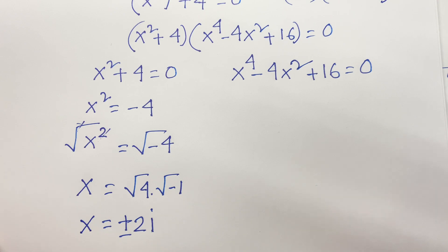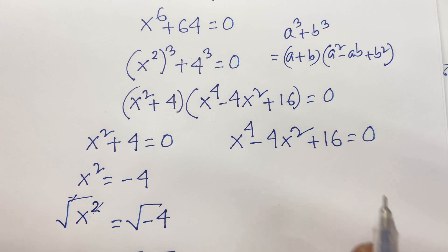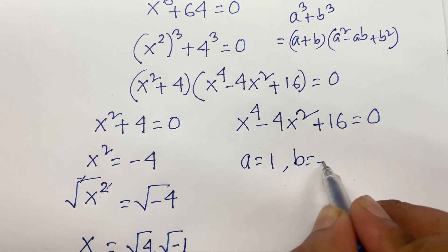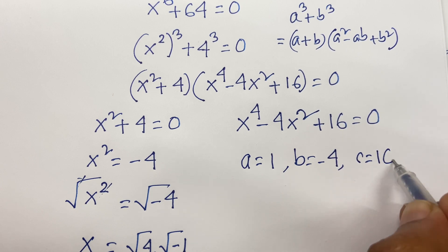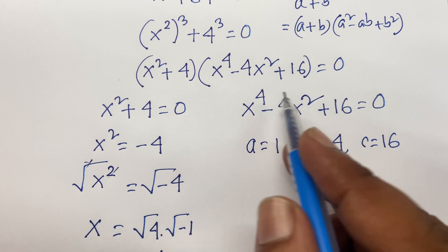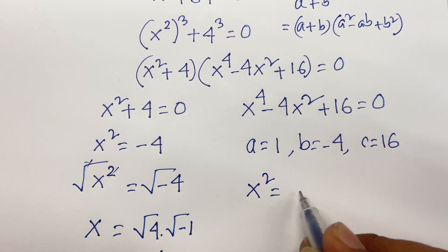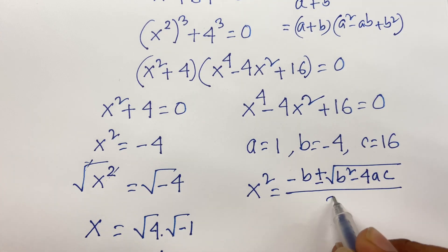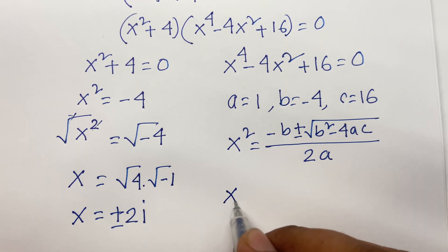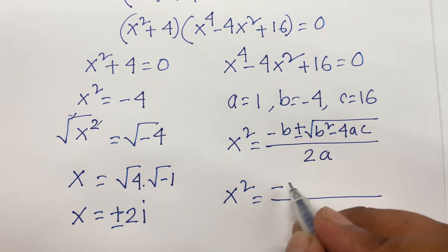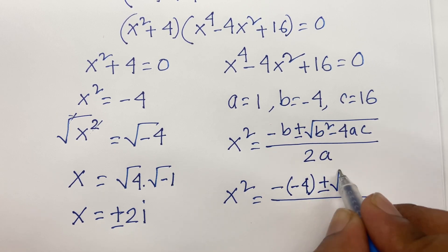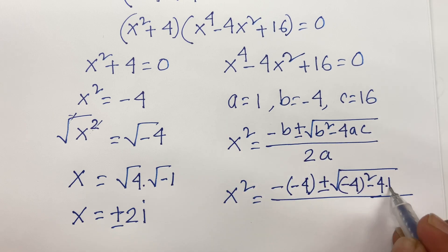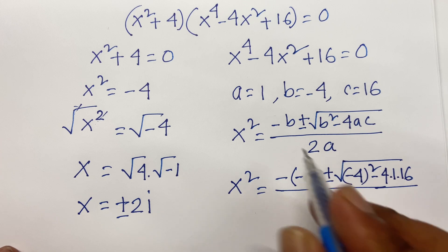For the second equation, x to the power 4 minus 4x squared plus 16 equals 0. Treating it as a quadratic in x squared, we identify a equals 1, b equals minus 4, and c equals 16. Using the quadratic formula, x squared equals minus b plus or minus square root of b squared minus 4ac, all over 2a.